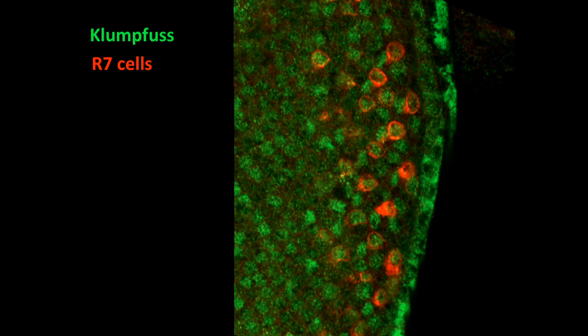If we look closer, we see that Clue is in fact expressed in every R7 cell, which are outlined in red, making it a good candidate regulator of spineless.